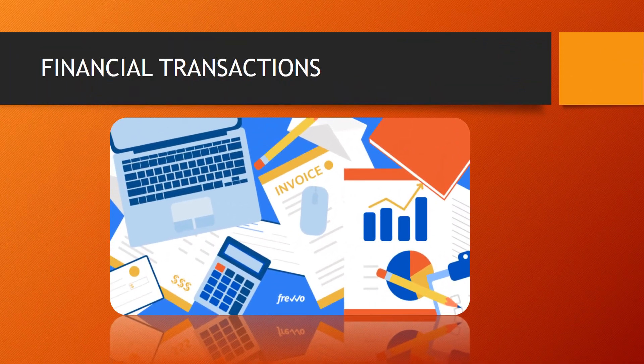Financial transactions: in accounting, we refer to any business deal as a transaction. Examples include: buying stock that the business is going to sell, paying the wages of someone who works for the business, receiving money from customers, and buying stationery from a supplier. A transaction is recorded on a piece of paper known as a source document. There are different source documents to record different transactions. The bookkeeper records the transactions so the owner can use the information to make decisions about how to run the business.